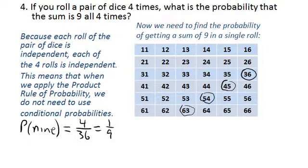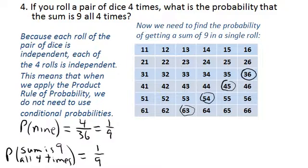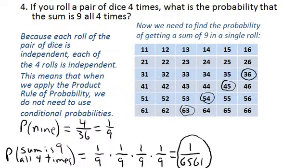Now we just explained that because these rolls are independent, the probability that the sum is 9 all four times is simply the probability that the first roll comes out to be 9 times the probability that the second roll comes out to be 9 times the probability that the third roll comes out to be 9 times the probability that the fourth roll comes out to be 9. And of course, that's 1 over 9 to the fourth, which is 1 over 6,561. So the probability of getting a sum of 9 four out of four times is 1 over 6,561.